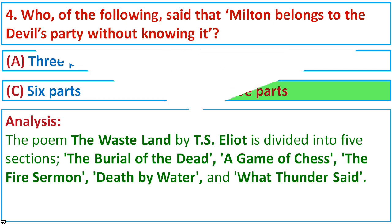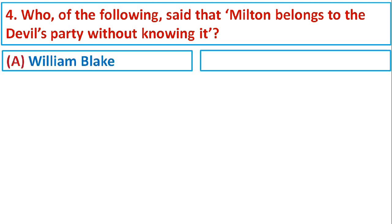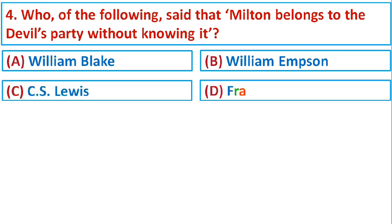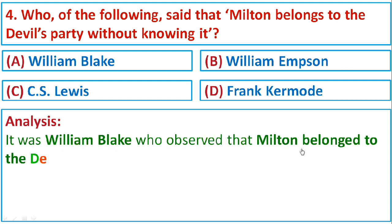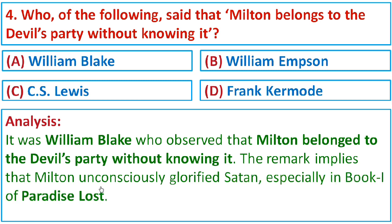Question number four: Who said that Milton belongs to the Devil's Party without knowing it? Option A: William Blake, Option B: William Empson, Option C: C.S. Lewis, Option D: Frank Kermode. It was William Blake who observed that Milton belonged to the Devil's Party without knowing it. The remark implies that Milton unconsciously glorified Satan, especially in Book One of Paradise Lost. The correct option is A: William Blake.